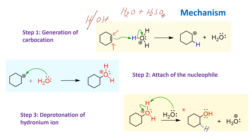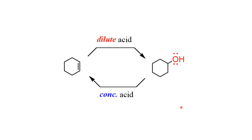Now let us see some of the other parameters of this reaction. First, why dilute acid and not concentrated acid? When a concentrated acid is used, the reaction undergoes a reversible reaction and results in elimination — elimination of the OH group or water — leading to the formation of the starting material. So if we use concentrated acid, it will convert the alcohol that is formed back to an alkene. That is why dilute acids are used for conversion of an alkene to an alcohol in a hydration reaction.